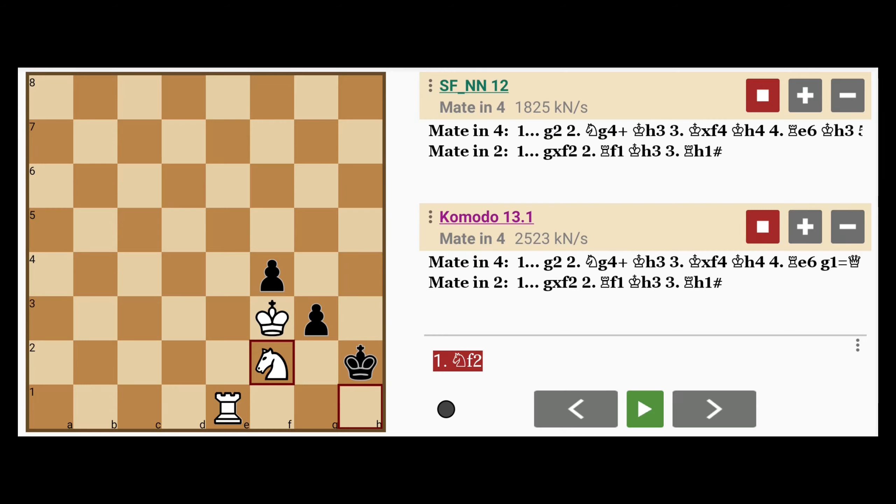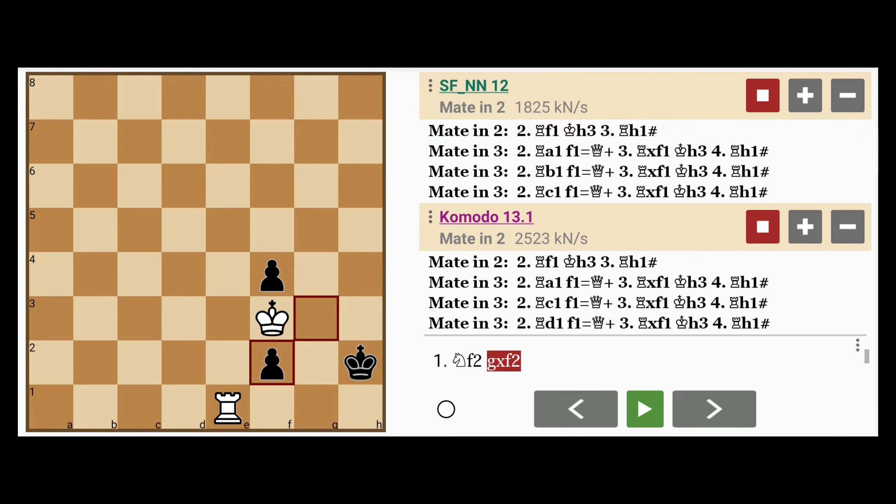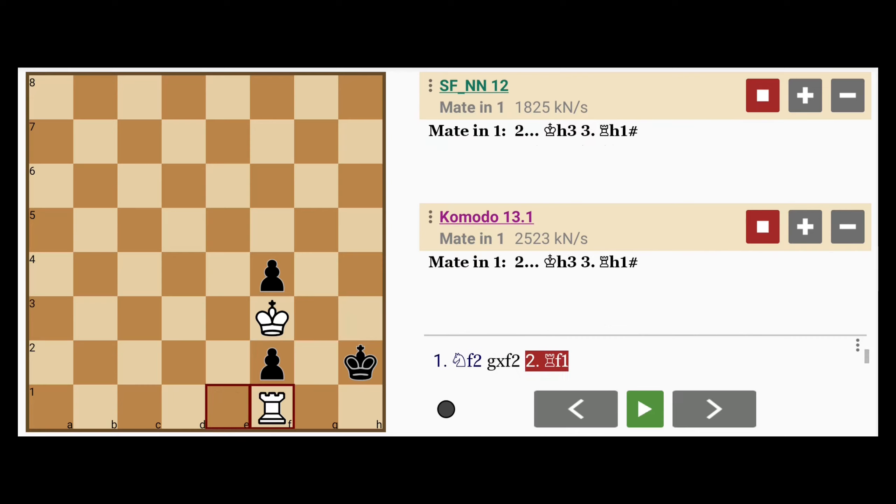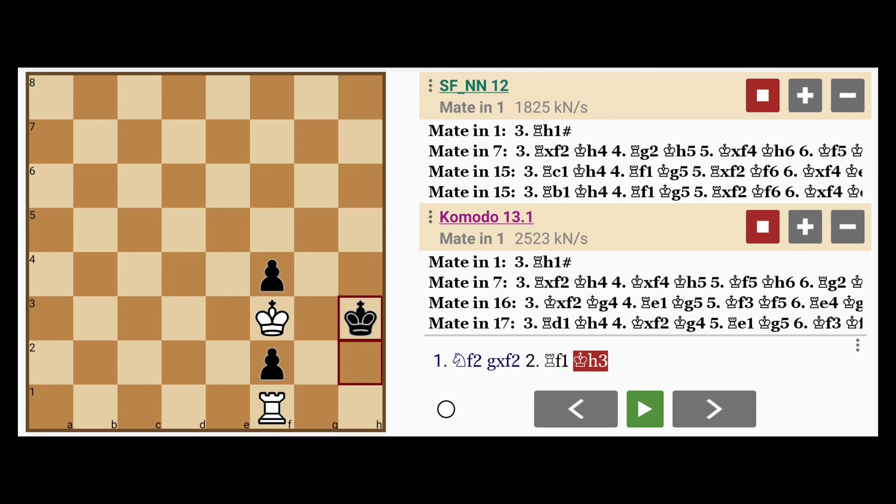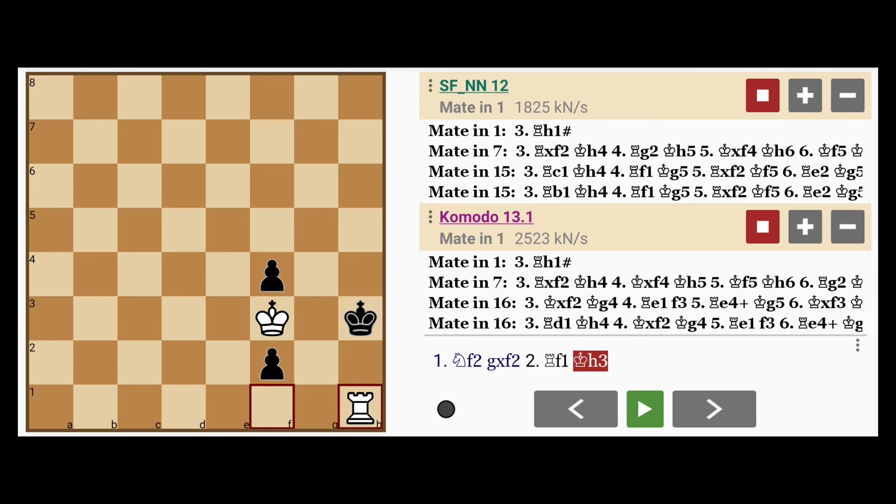And now here, if g captures f2, well then rook to f1, the king has to move to h3, unguarding the h1 square, so black can mate on h1. That's a mate in three moves.